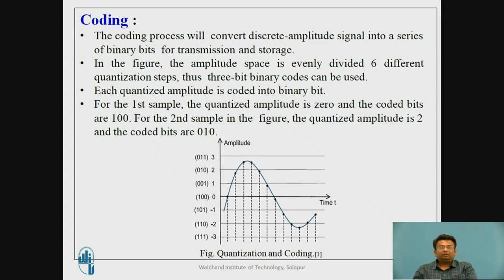For the first sample, the quantized amplitude is 0 and it is coded into bits 1 0 0. For the second sample, the quantized amplitude is 2 and it is coded into 0 1 0.